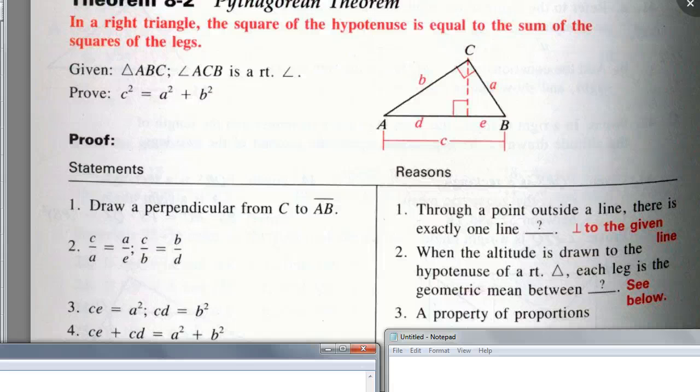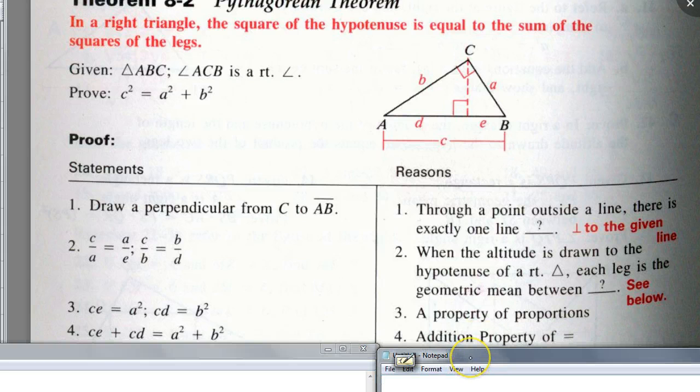Do you guys remember the addition property of equality? If A is equal to B and C is equal to D, what is A plus C equals to what? B plus D. That's what we have here, right? A equals to B and C plus D. So that's D. Addition property of equality. Do you guys remember? Okay, that's great.